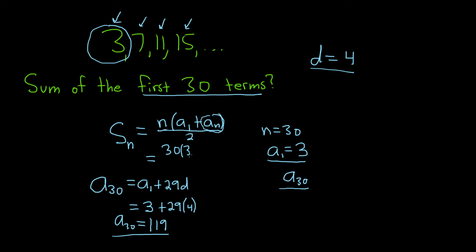so that will be 3, plus a sub 30, that's going to be 119, and it's all being divided by 2. So this is actually 15, right, because 2 goes into 30, 15 times. And then 3 plus 119 is 122.